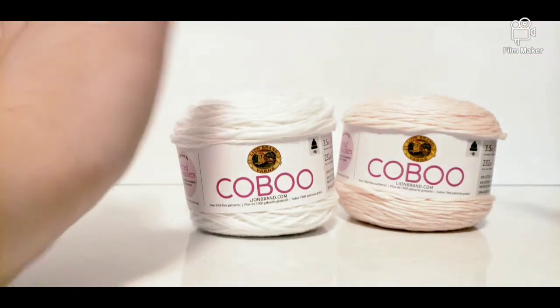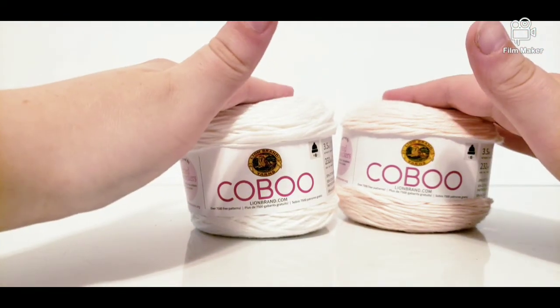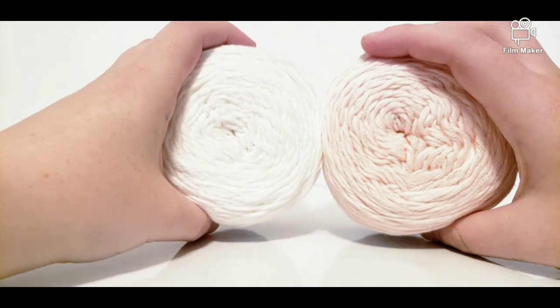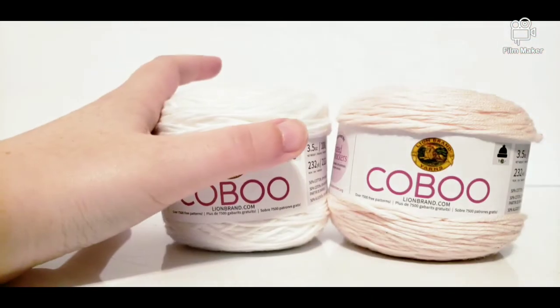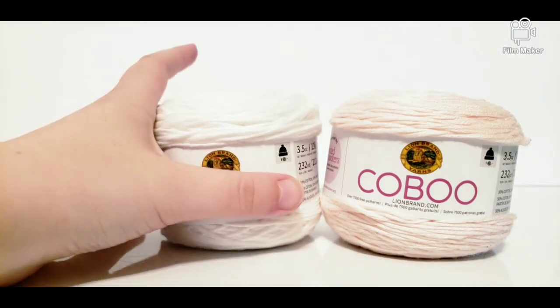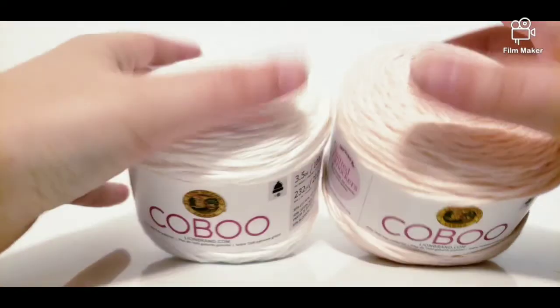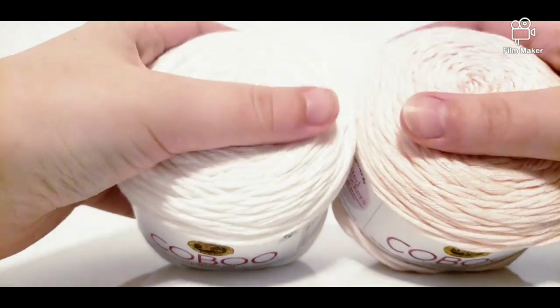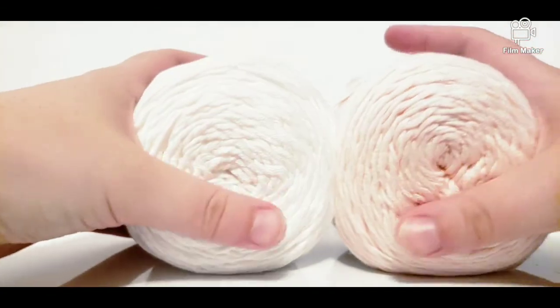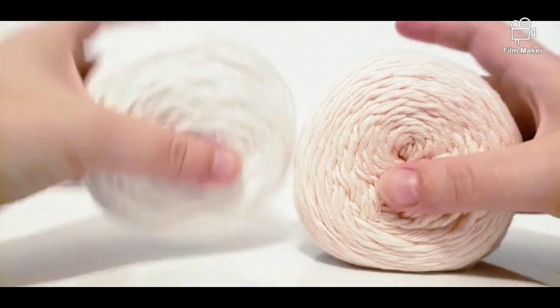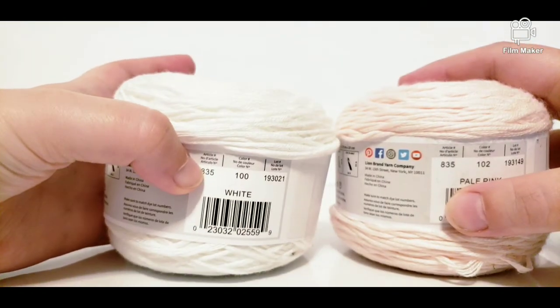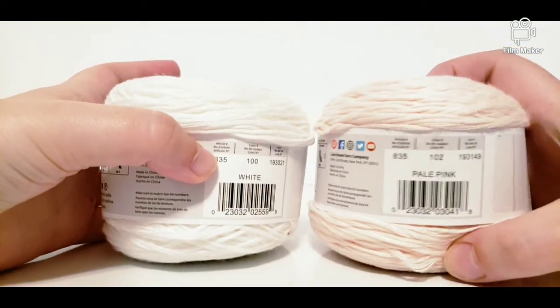My Walmart finally got the Kaboo yarn in and I had to get some. They had three colors at my Walmart but I only grabbed two because I thought that these were the prettiest colors that they had. The other color was a tannish brown color. I can't even remember the name of it but these to me are kind of antique-y colors. This one's a soft pink and then a crisp white. That one says white and that one is pale pink.